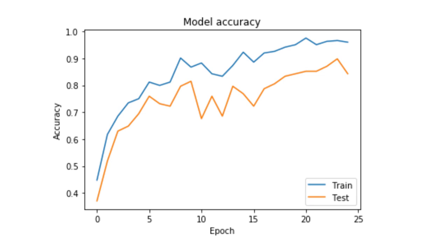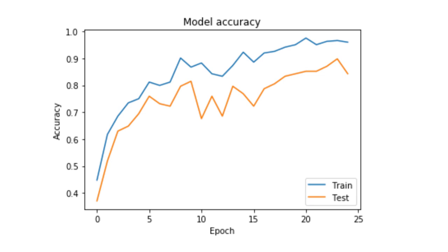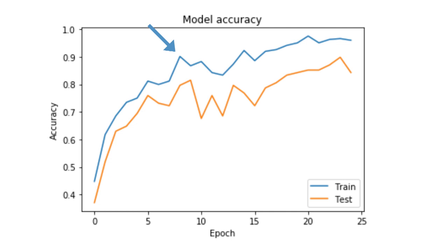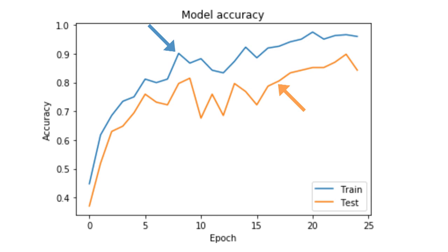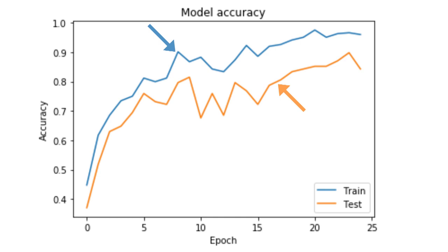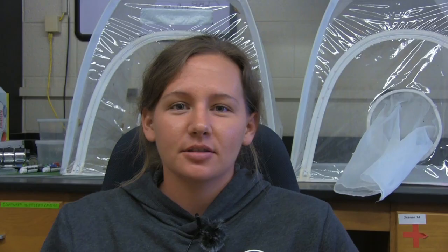This is what the accuracy graph is supposed to look like. This top line is the training set and this bottom line is the test set. The training set that I give it splits into two groups — another training set and another test set — so it's an 80-20 split. It goes through all the training photos first and then the testing photos to see how well it did, and that's how I get this data. The better the test line imitates the training line and the closer they are together, the better it is.